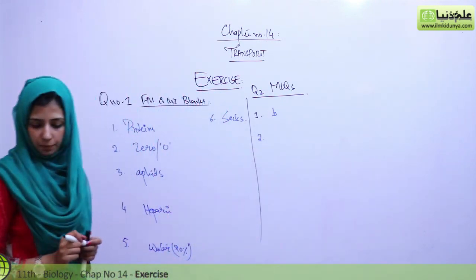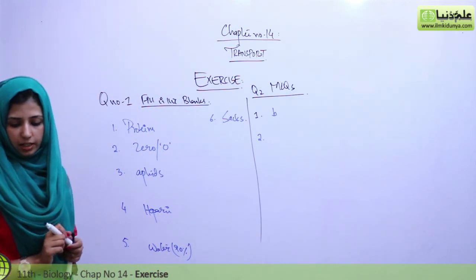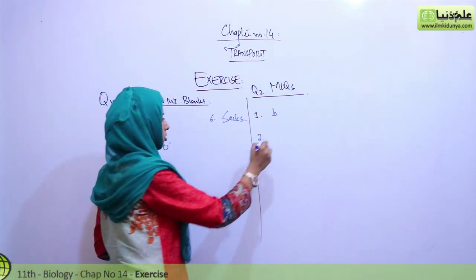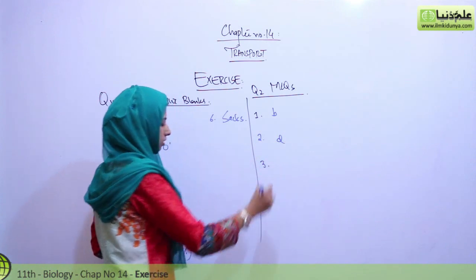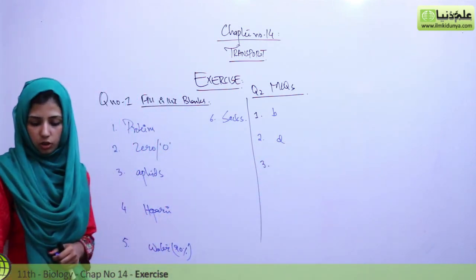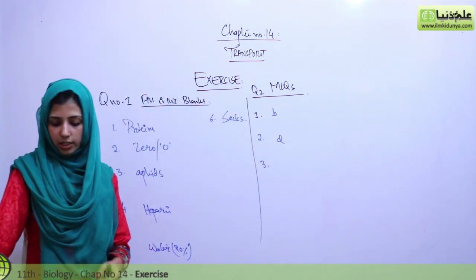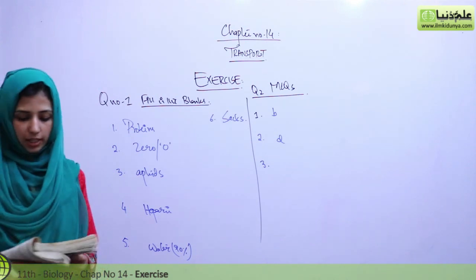Second is, the Casparian strips are present in option D, cells of phloem. Third, the lymph most closely resembles with option A, blood.